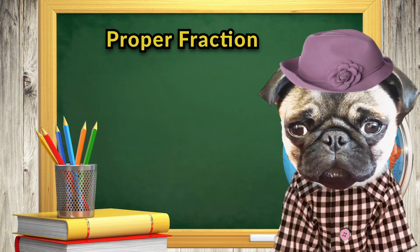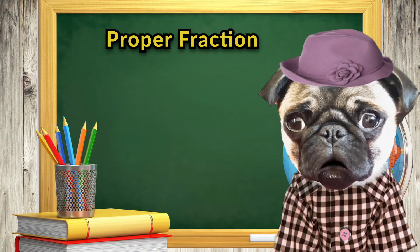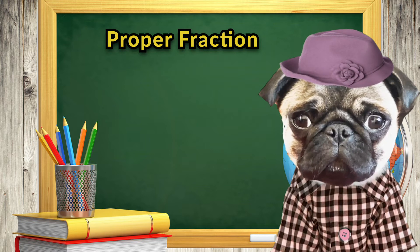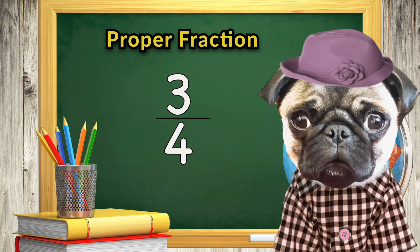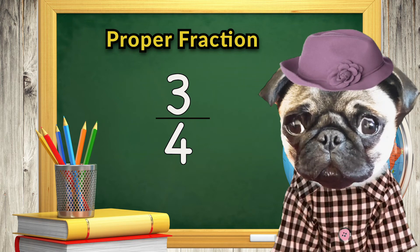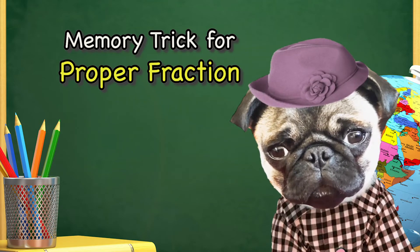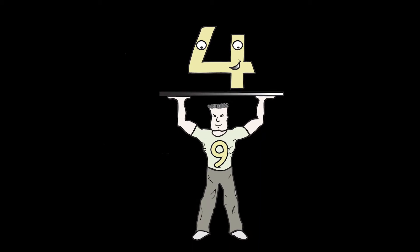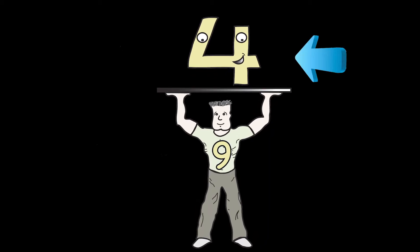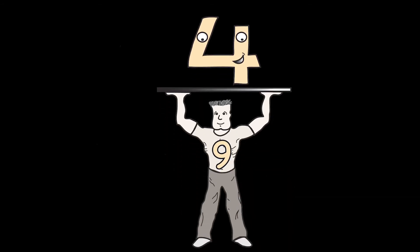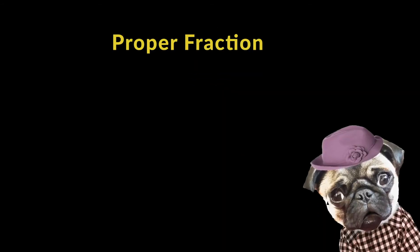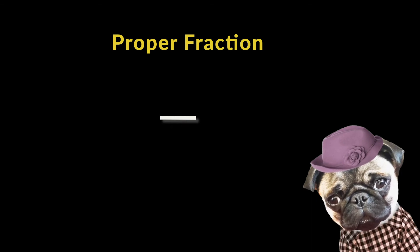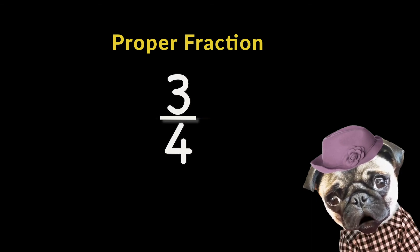A proper fraction is a fraction in which the numerator is smaller than the denominator. For example, this is a proper fraction. Here's a trick to remember what a proper fraction looks like. The denominator is the strong man of the fractions. His job is to hold up the weaker, lesser number, the numerator. This is the proper way to lift a fraction. So remember, a proper fraction is when the bottom number is larger than the top number.